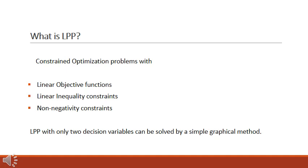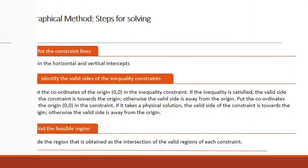Problems can be solved by the graphical method when there are only two decision variables. The first step is to plot the constraints. We have the inequality constraints, but for plotting them, the inequalities are converted to equalities. Then we find the horizontal and vertical intercepts.